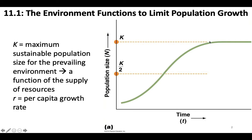K is a function of the supply of resources in the environment. Once a population size reaches its carrying capacity, or K, it stops growing, and in a few examples we'll talk about later, it may even decline.